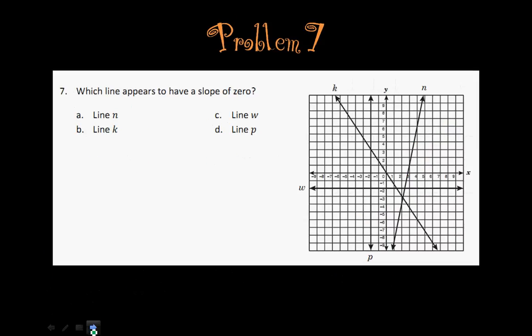Okay, and then the last problem says which line appears to have a slope of 0. And the answer is W, this line right here.